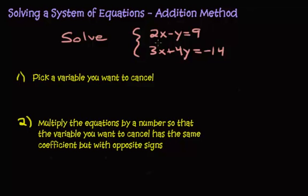Our next example has the following system: 2x minus y equals 9, 3x plus 4y equals negative 14. So let's just jump right into it. Let's pick a variable you want to cancel. Since in the last example we picked y, let's pick x, because why not?